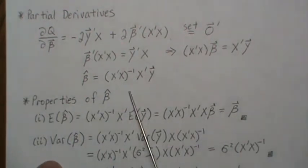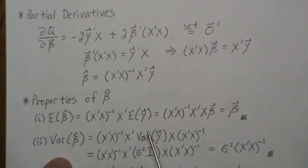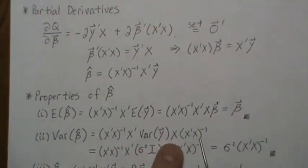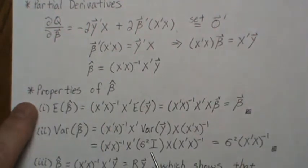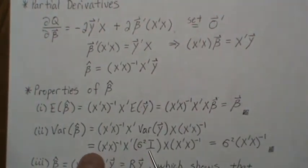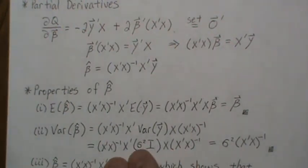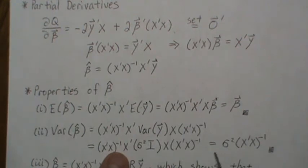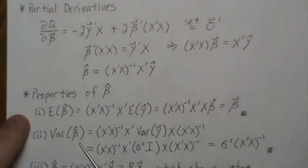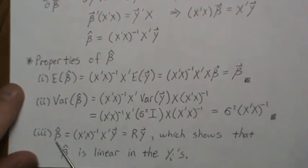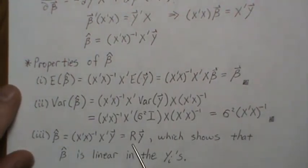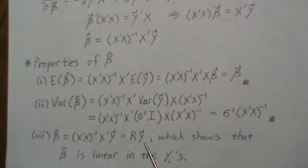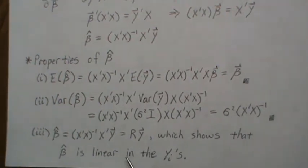Now the variance of beta hat: this matrix out front comes out, and then it goes out back transposed. The variance of Y is sigma squared I, so sigma squared comes out front and the identity goes away. These pieces combine — X transpose X inverse X transpose X becomes the identity — and we're left with sigma squared times X transpose X inverse, which is the variance-covariance matrix of our least squares estimates for beta. Notice that beta hat can be written as R times Y, showing that beta hat is linear in the Y's. This will be important when we show that beta hat is normally distributed.